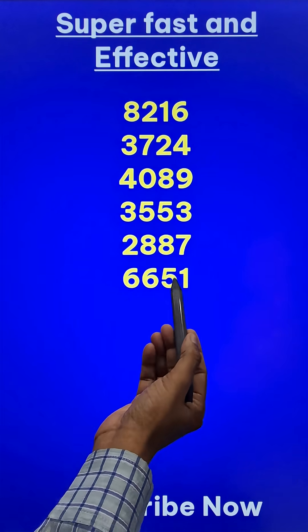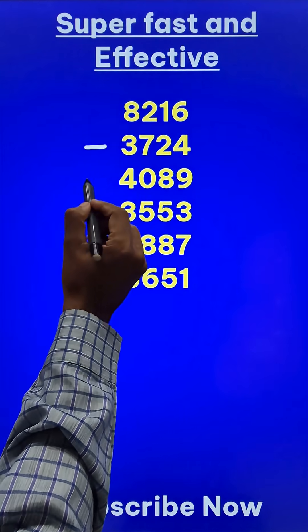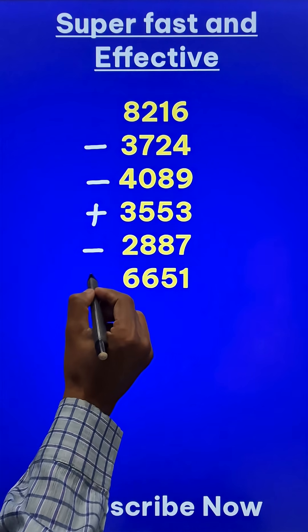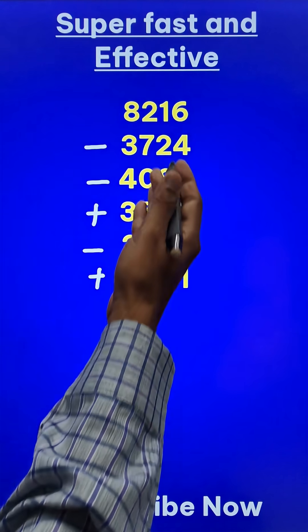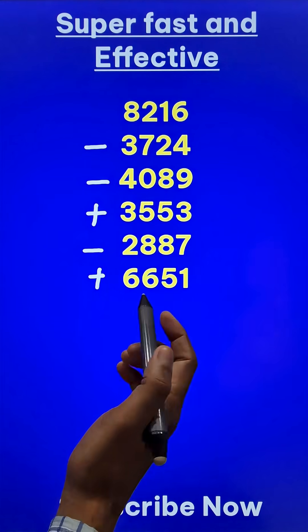Look at these huge four digit numbers. The first number we have to do minus the second number, minus the third number, plus the fourth number, minus the fifth number and plus the sixth number. Can you do it in a single line? Difficult right? They are big integers.